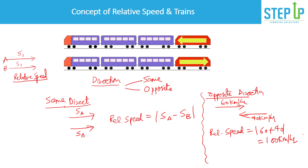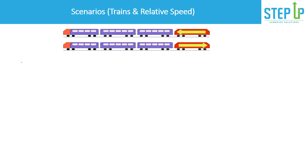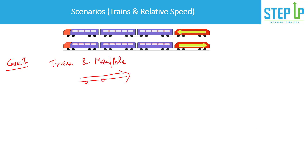This is the concept of relative speed, and on this same concept there are some scenarios on trains in exams. Case one is the scenario involving a train and a man, person, or pole. In this case, there is a train going in a certain direction and a pole or a person standing stationary.